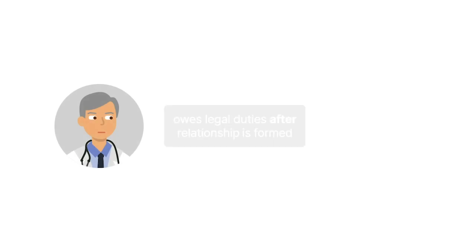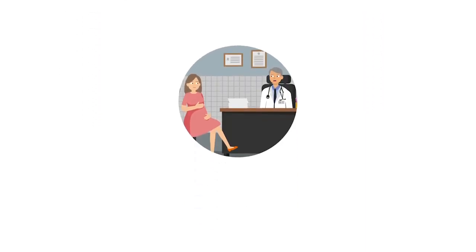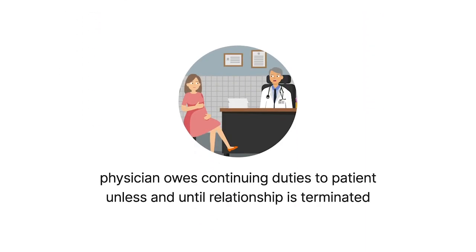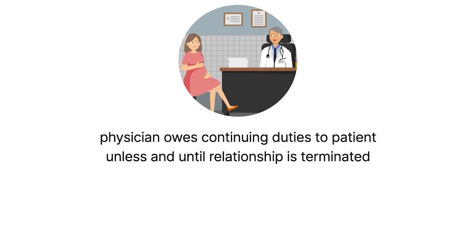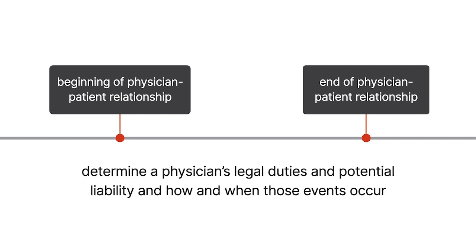In general, a physician owes legal duties to a patient only after a physician-patient relationship is formed. However, once a physician-patient relationship has been formed, the physician owes continuing duties to the patient, such as duties regarding the patient's consent, privacy, and care, unless and until the relationship is terminated. Thus, the beginning and end of a physician-patient relationship are important bookends for determining a physician's legal duties and potential liability.